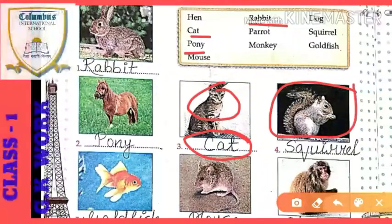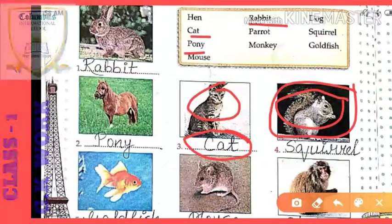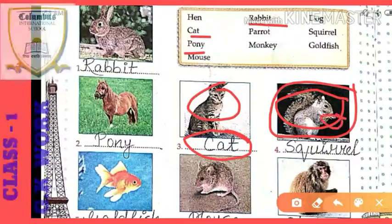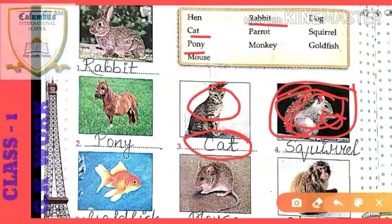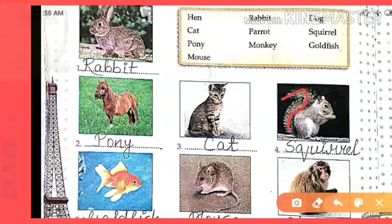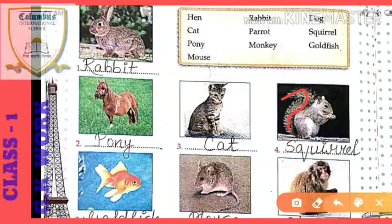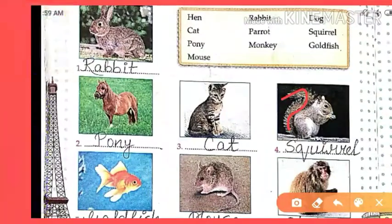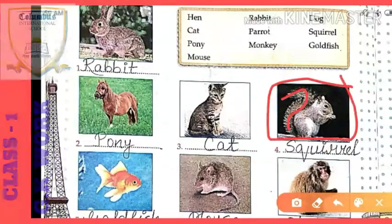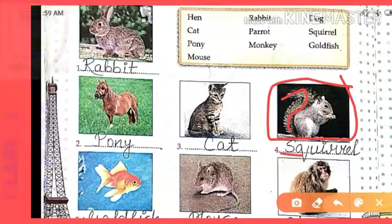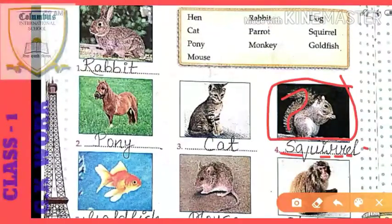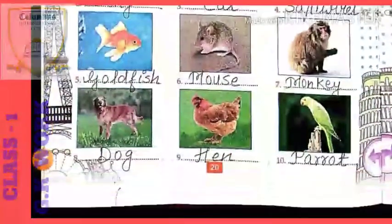The fourth one is a squirrel — in Hindi we call it gilhari. Their structure has small ears, a small body, and their tail on their back is like a feather — long, fluffy, and very soft. This animal is called a squirrel. Spelling: S-Q-U-I-R-R-E-L. If you have trouble with the spelling, take it from the help box.